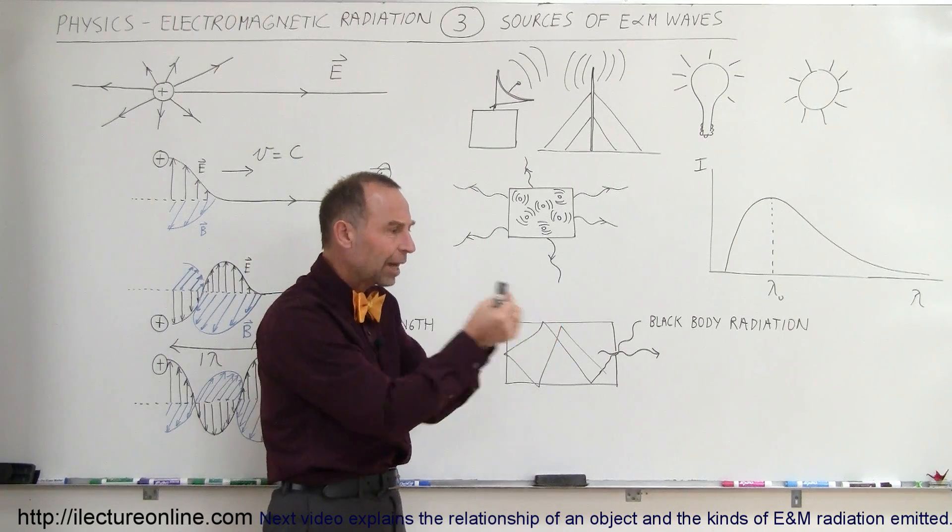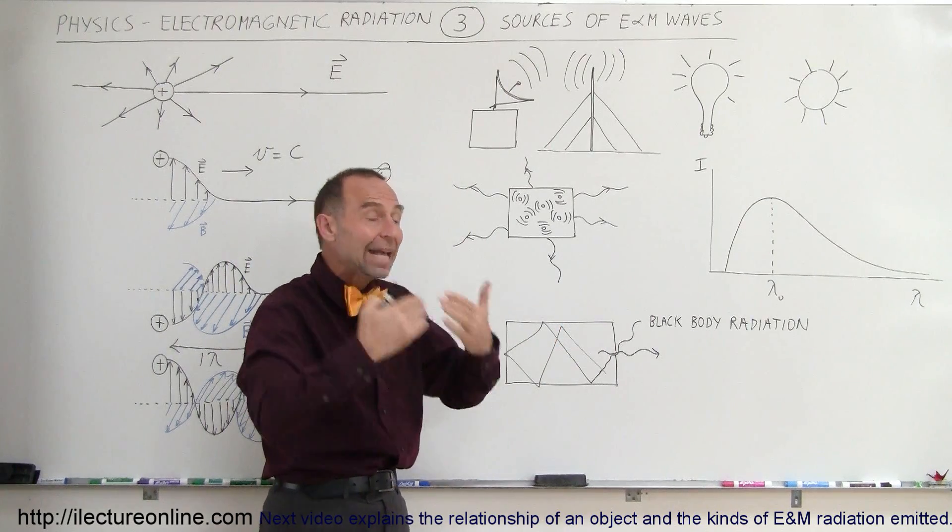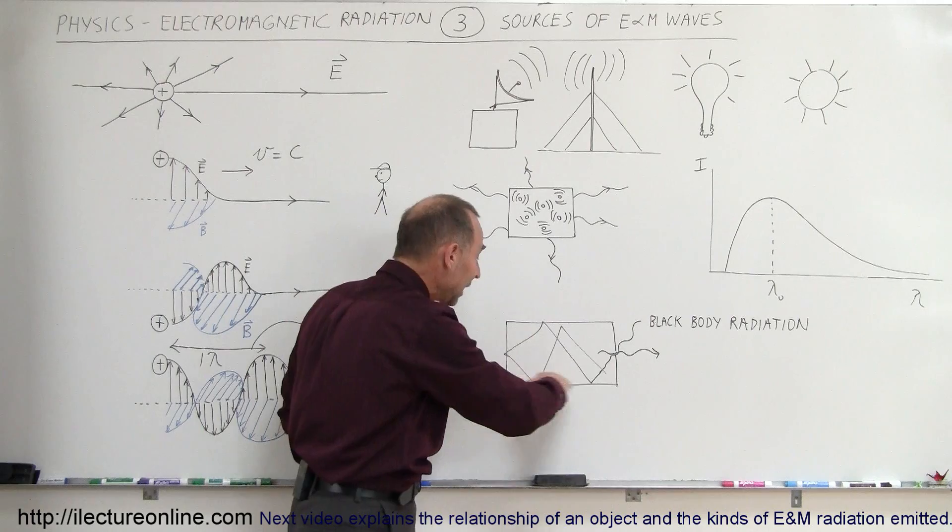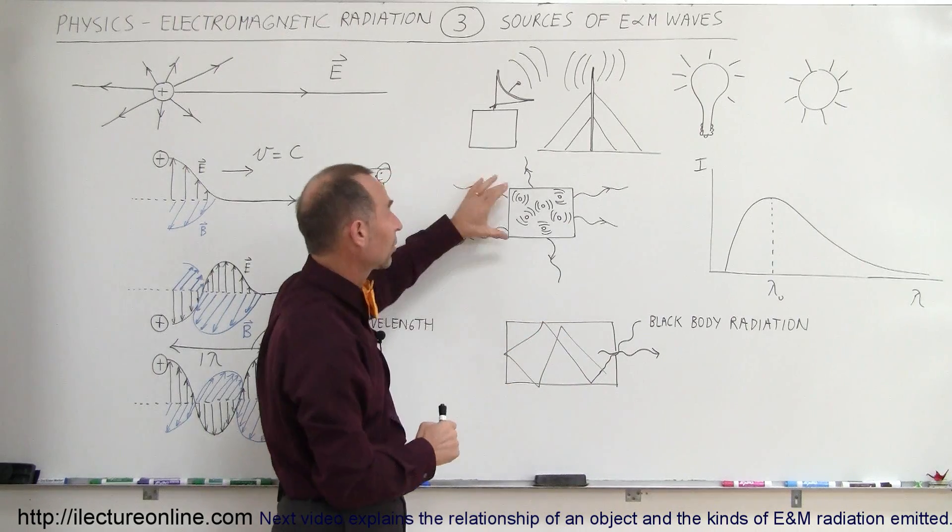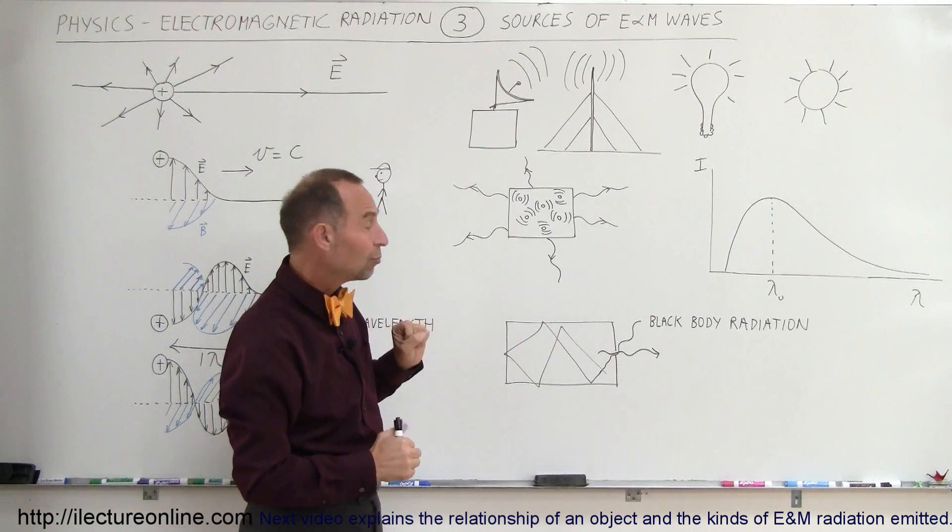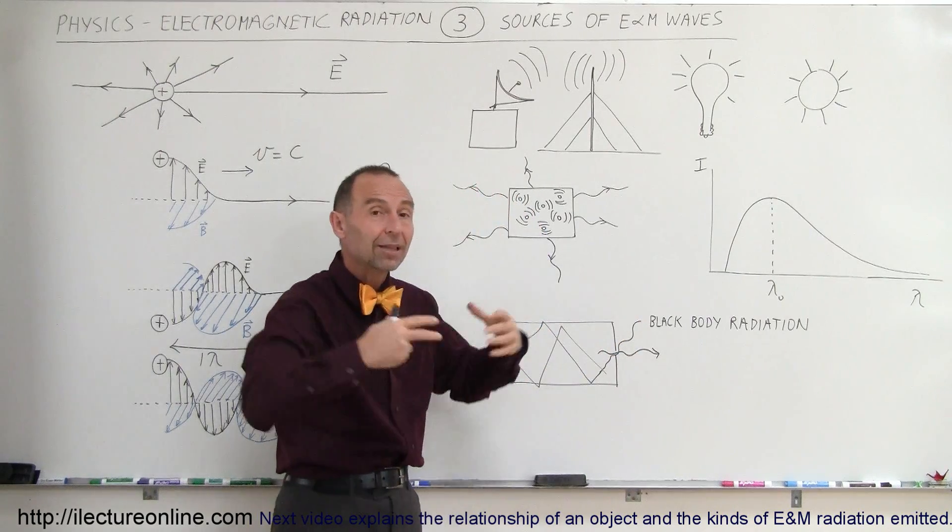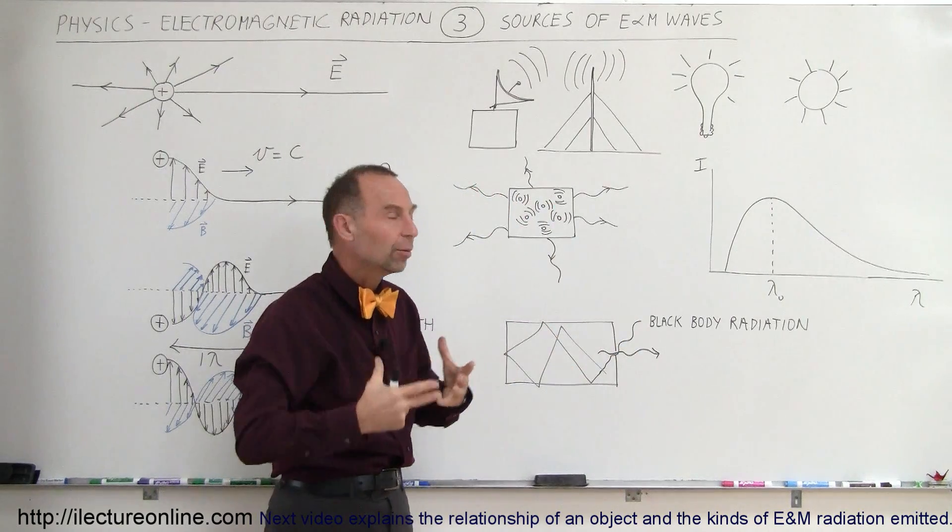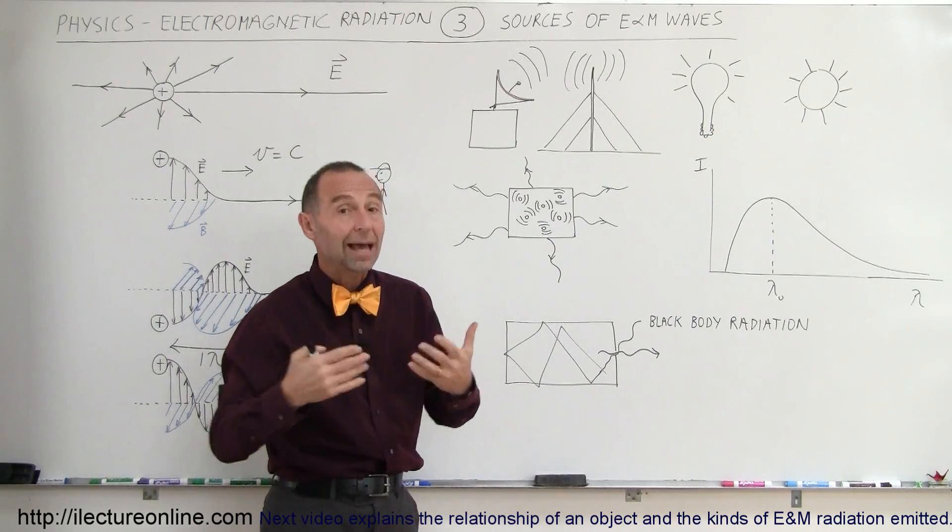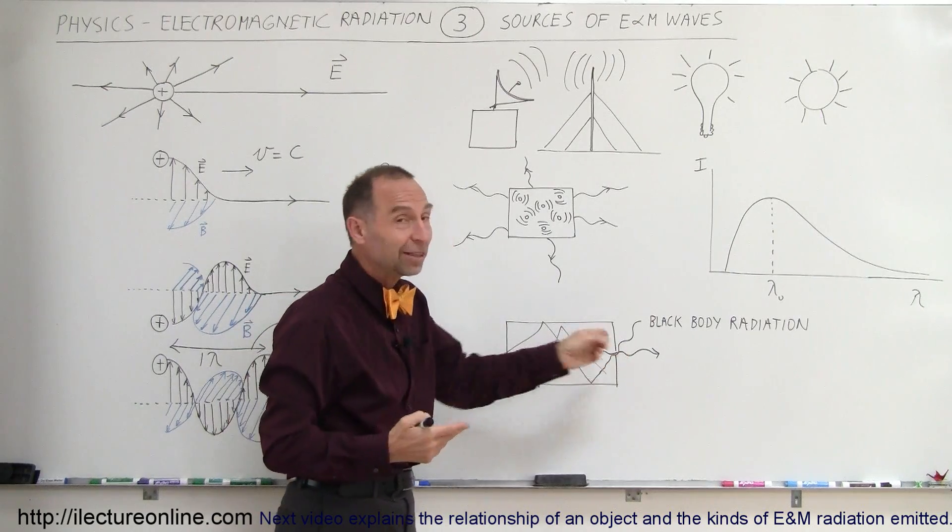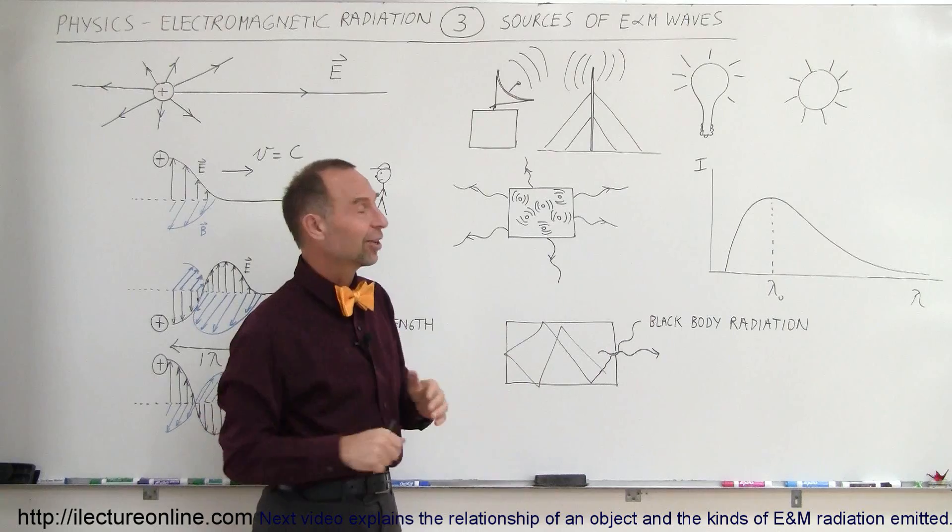And so therefore what we see coming out of the box is simply the radiation coming from the vibration of the atoms on the walls of the box, just like what we talked about here in this object. Whatever energy makes it out of the box is typically the radiation energy from the walls of the box, and therefore that's called the black body radiation curve, because when you look in there all you see is a black body, you don't see any color at all.